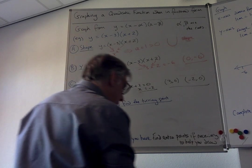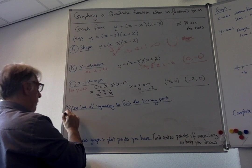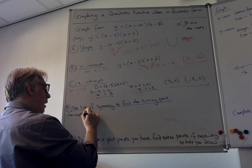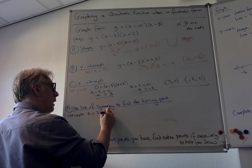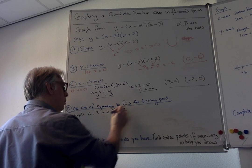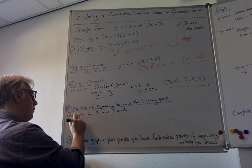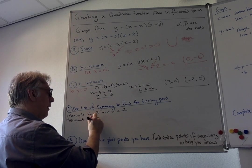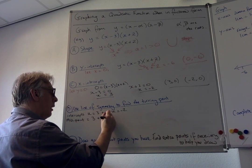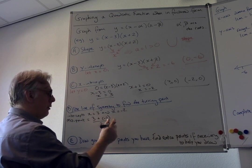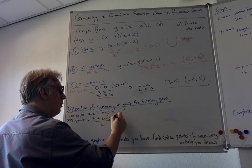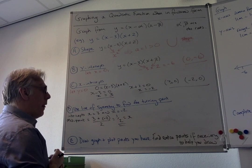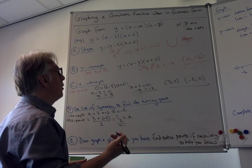It's exactly in the middle. The intercepts are x equals 3 and x equals minus 2. What we need is the midpoint. For a midpoint you add both numbers together and divide by 2. So 3 plus minus 2 is 1, divide by 2, we get a half for x for the turning point.